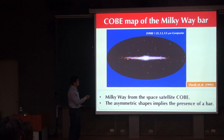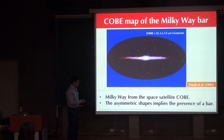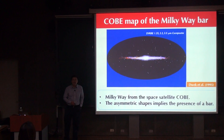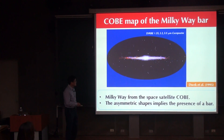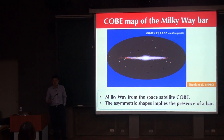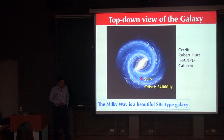When I first saw this COBE image around 1991, I didn't notice anything. But our department chair at Princeton, Dave Spergel, saw something different. He noticed that one side is bigger than the other, and immediately realized this indicates a bar at the center of the Milky Way. The reason is simple: if you have a symmetric structure at the center, the two sides should look identical. But this is not the case, and the reason for this non-axisymmetry is clear from the schematic diagram.